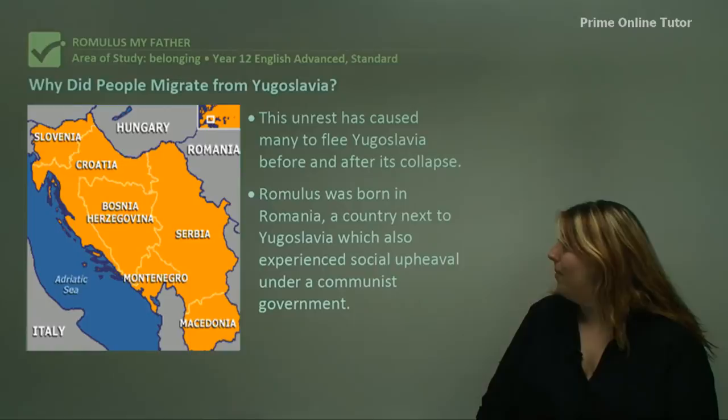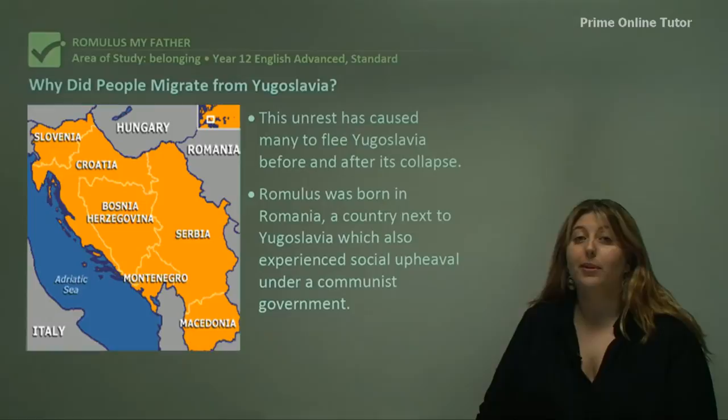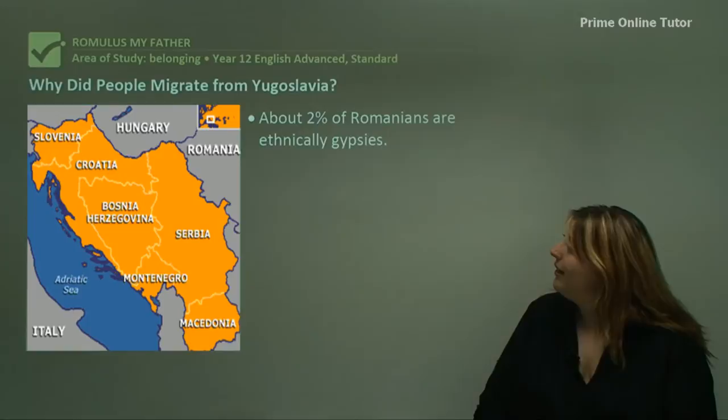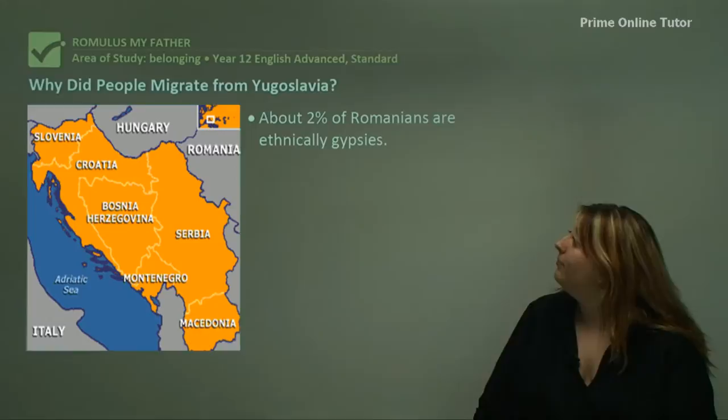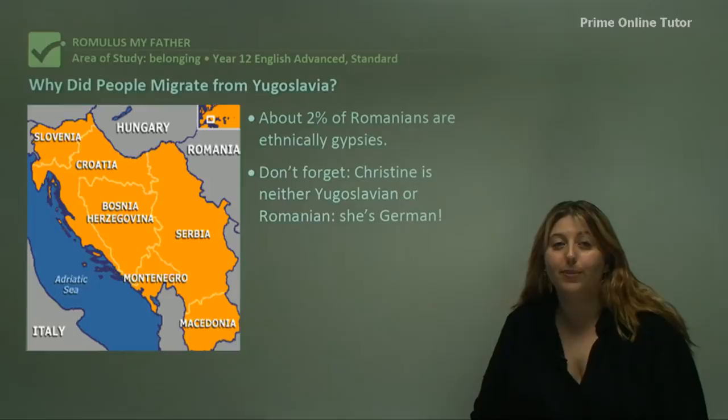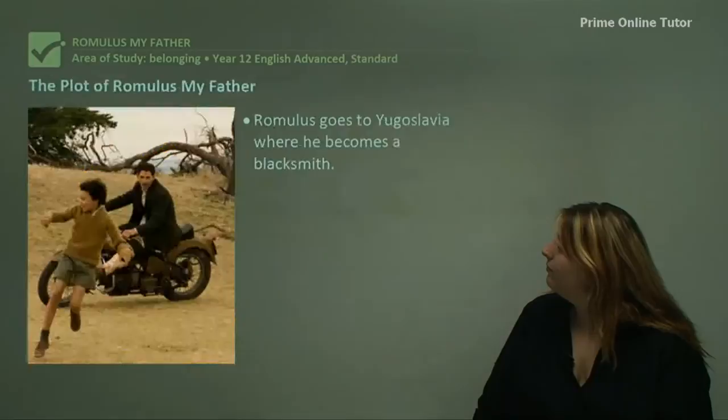Romulus was born in Romania, a country next to Yugoslavia, which also experienced social upheaval under a communist government — a very similar experience to Yugoslavians. About 2% of Romanians are ethnically gypsies, and keep in mind that Romulus always refers to himself as a gypsy. Don't forget that Christine is neither Yugoslavian nor Romanian — she's actually German. So you have a multitude of ethnicities mixing in this story.